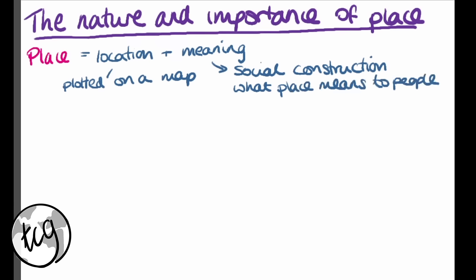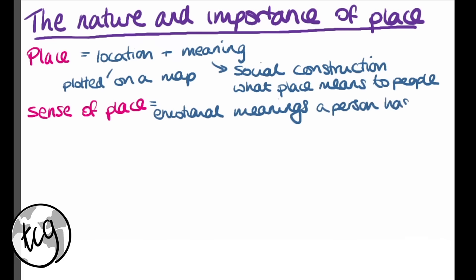This gets us onto another key term: sense of place. Sense of place is the emotional meanings a place has to people. Therefore it is subjective — it connects individuals or a group of people to a location. For example, you might have a sense of place or an attachment to the school that you go to because you formed a lot of friendships there and therefore you have an emotional connection to it.